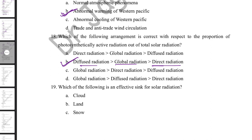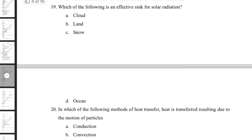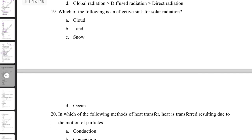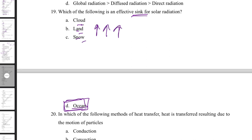Which of the following is an effective sink for solar radiation? The ocean is the most potent sink for solar radiation. Clouds, land, and snow are effective reflectors of solar radiation, but the ocean acts as the sink.